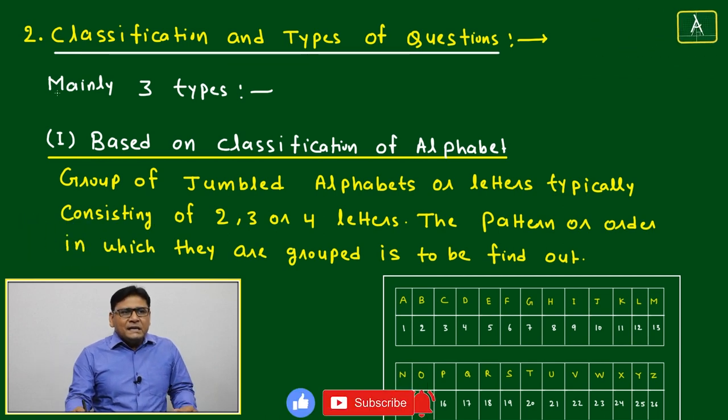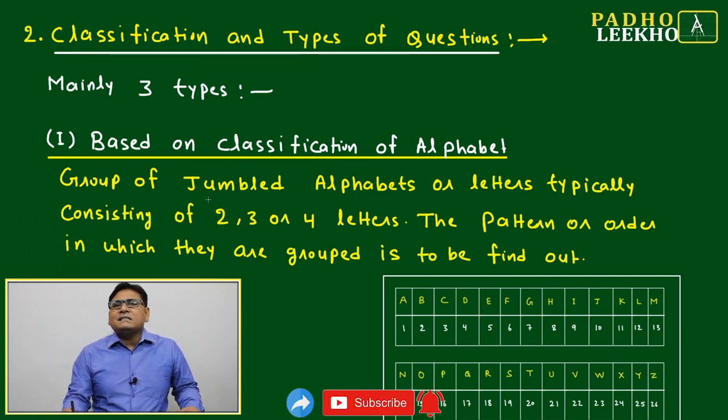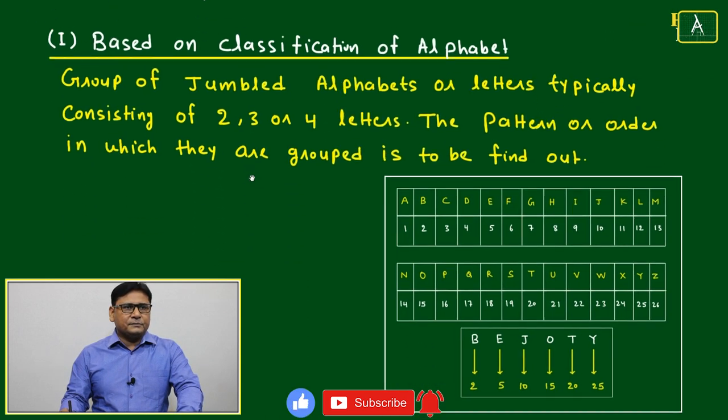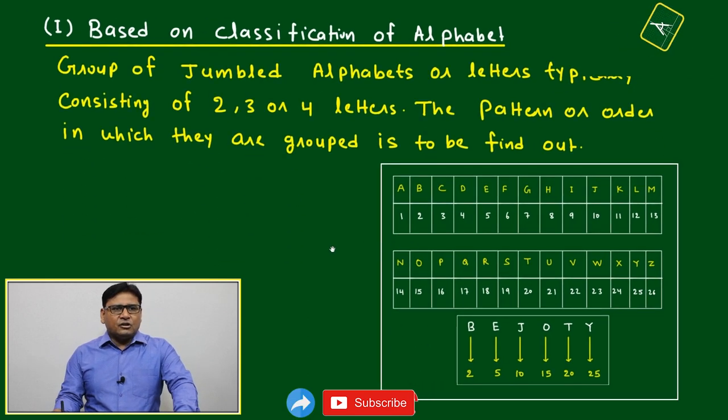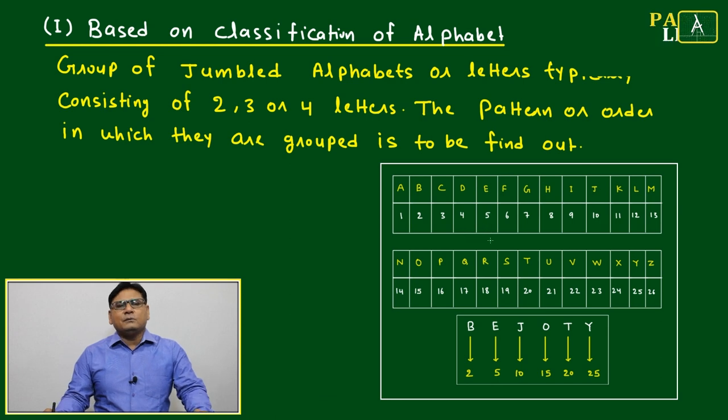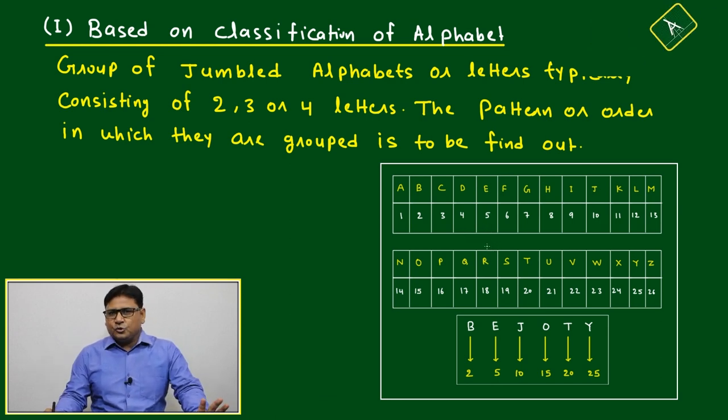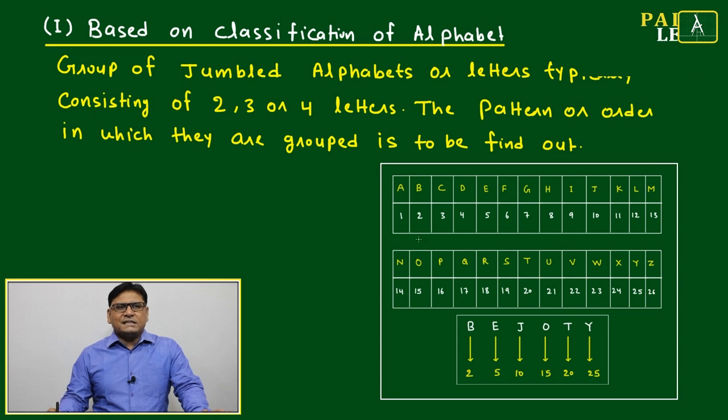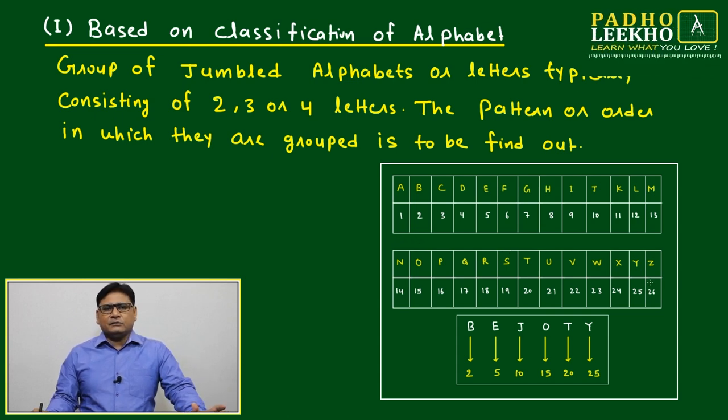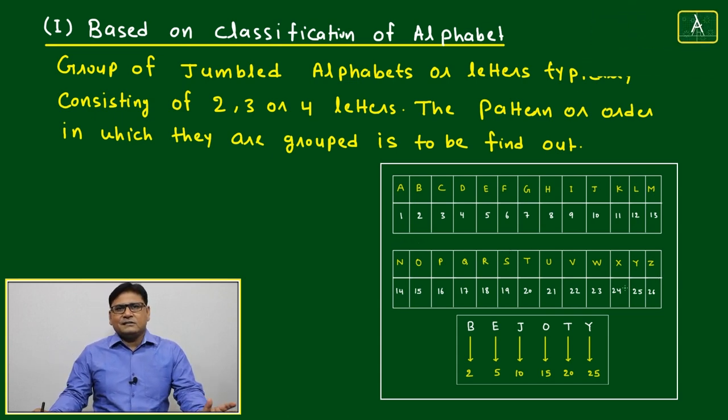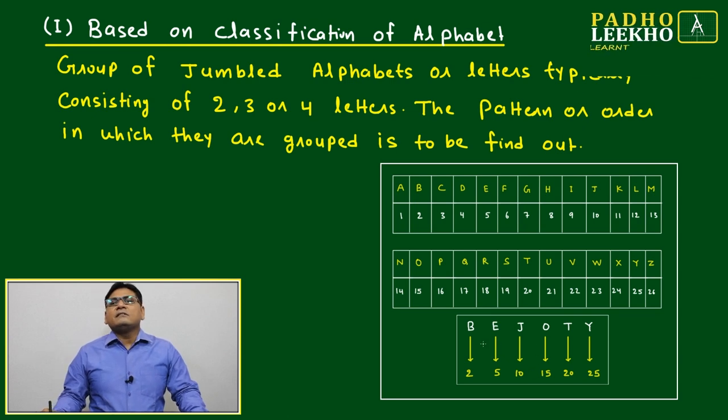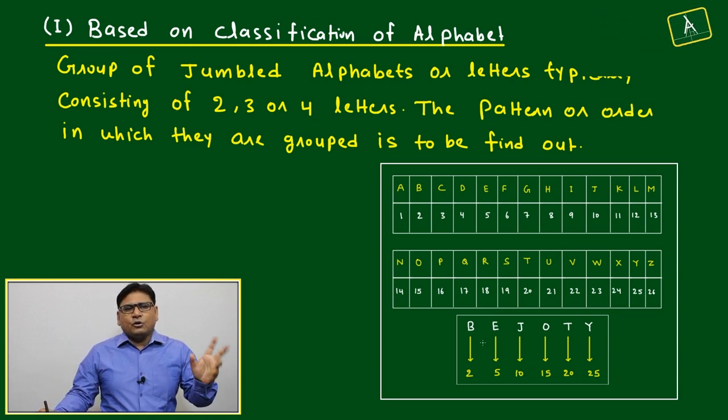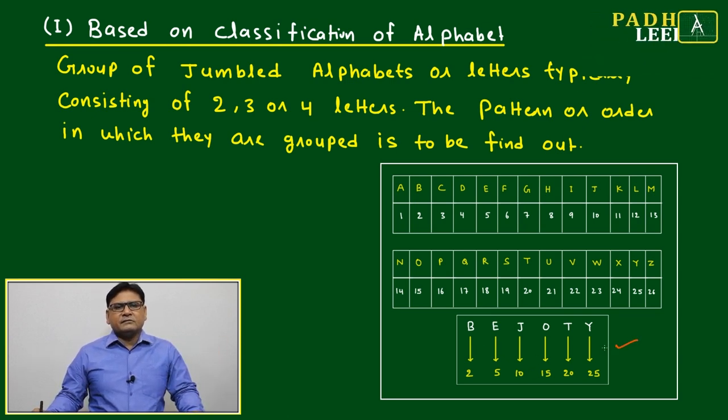Mainly three types of classification we will discuss under this, and first is based on the alphabet. This chart or table, if you remember it, will be easy. It's not difficult to remember - total 26, it will start with A and go up to Z. No need to say, it is nursery class. The only thing here is the logical way of how to remember. One of the tips is mnemonics.